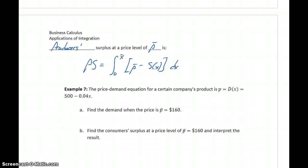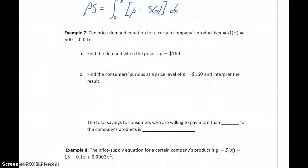So we apply one of those two formulas to find either consumer surplus or producer surplus. In example 7, the price demand equation for a certain company's product is P equals D of x, 500 minus 0.04x.